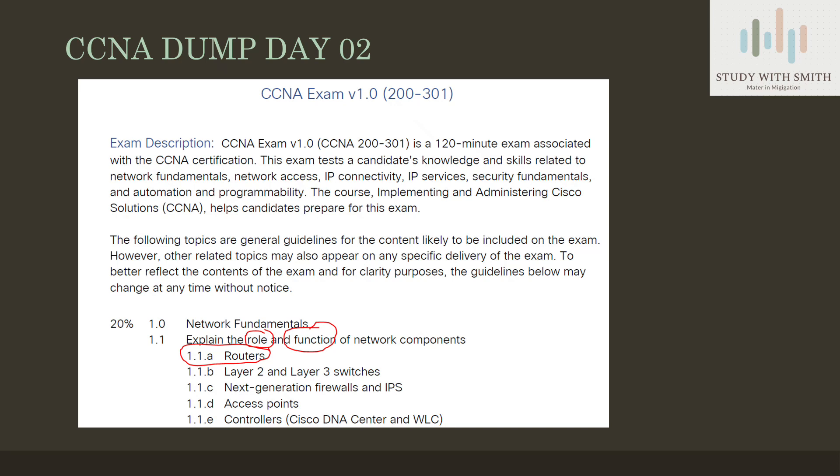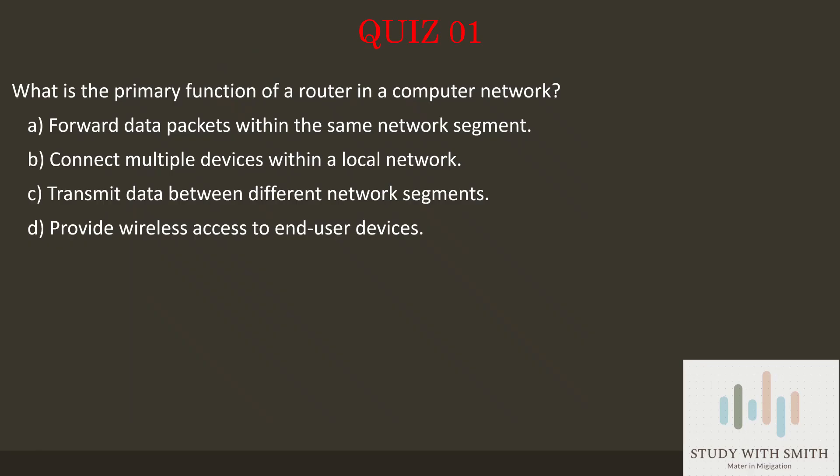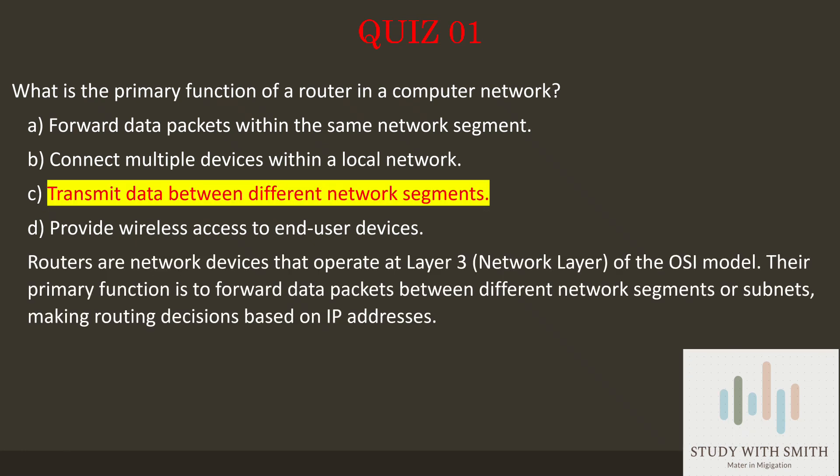1.1 Routers. Question 1: What is the primary function of a router in a computer network? The answer is C: Transmit data between different network segments.